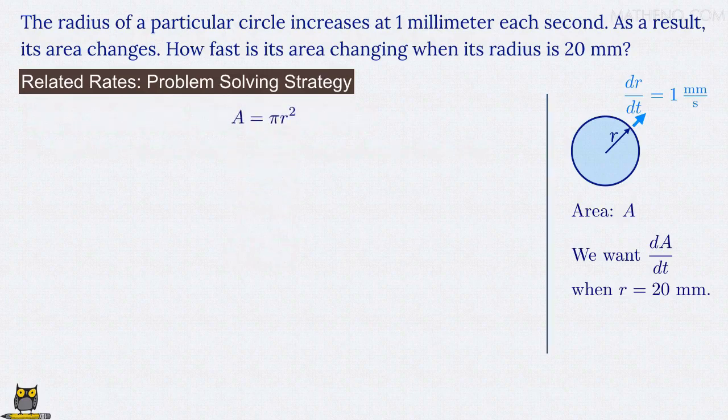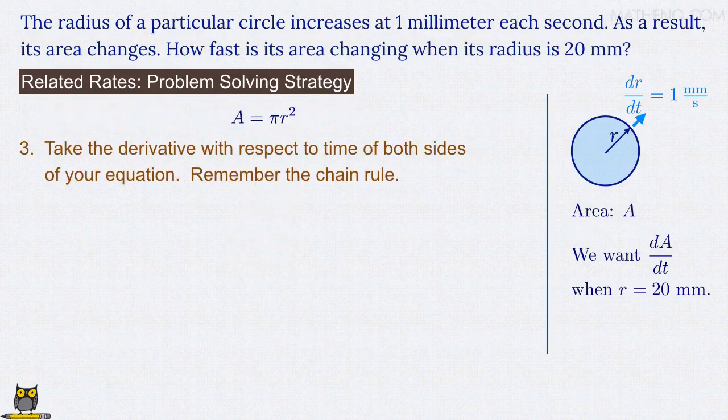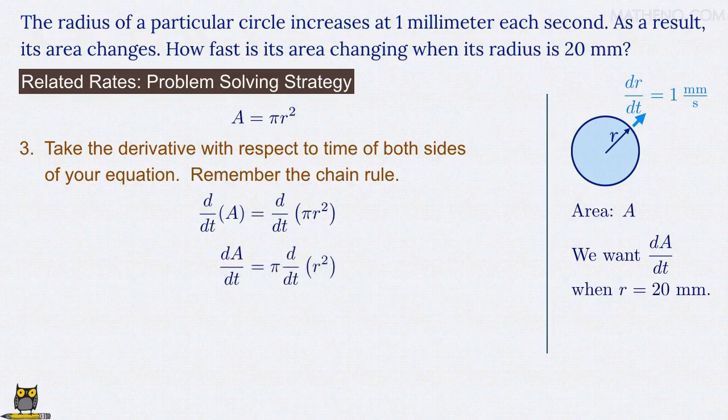So we can move to the third step and take the derivative with respect to time of both sides of our equation, remembering the chain rule when we do so. The derivative of the left-hand side of the equation gives us d/dt of the circle's area A, and that equals the derivative of the right side of the equation, d/dt of pi r squared. On the left-hand side, the derivative with respect to time t of the area A is the rate dA/dt. On the right-hand side of the equation, we can pull pi out, since that's a constant, and we're left with the derivative d/dt of r squared, and that derivative is 2r times dr/dt.